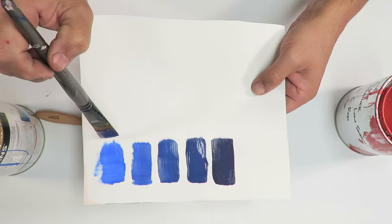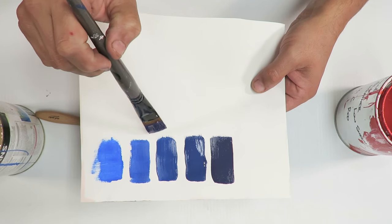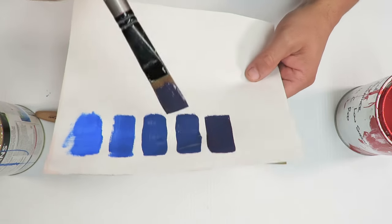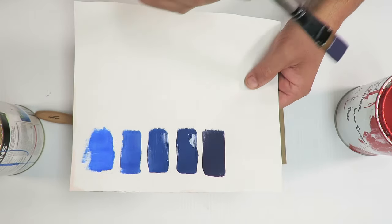But you know, you've got your light blue there, medium blue, dark blue, really dark blue and then almost purple. So if I keep going, this will go purple.